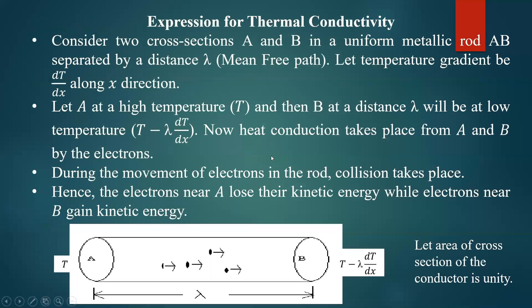Let us start the derivation of the expression for thermal conductivity. Thermal conductivity is basically the measure of thermal conduction in the case of metals — the amount of heat conducted by the conductor in the presence of a temperature gradient. There should be a temperature difference between the two ends of the conductor, and then there will be thermal conduction.